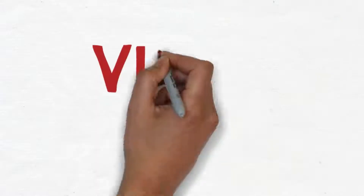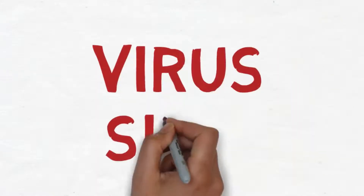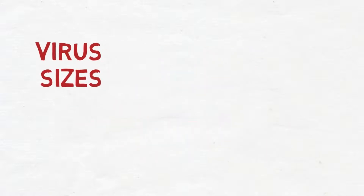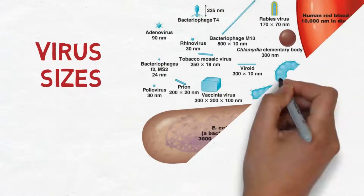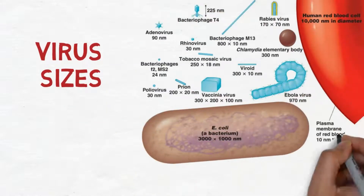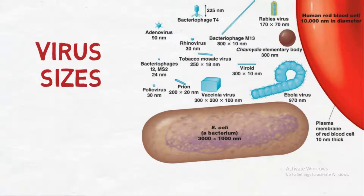Let's now compare virus sizes. As we can see here, the size of viruses is much smaller than the plant cell and also smaller than the bacterium E. coli. So as we said before, viruses can only be seen with the electron microscope.